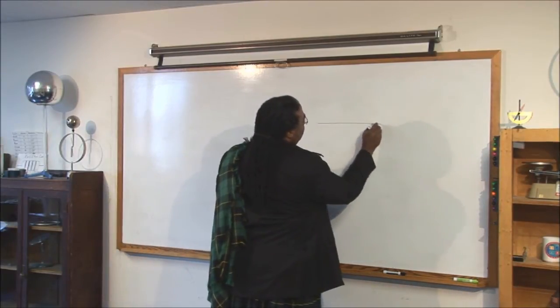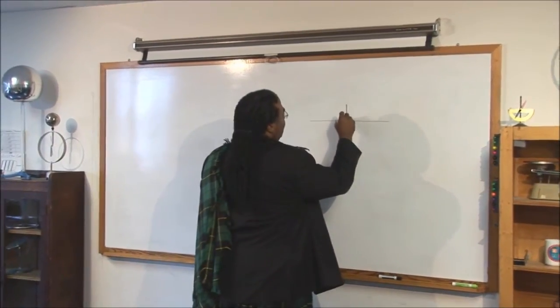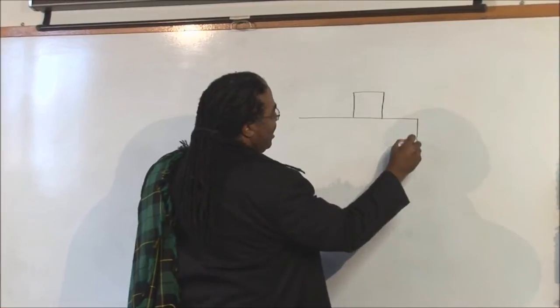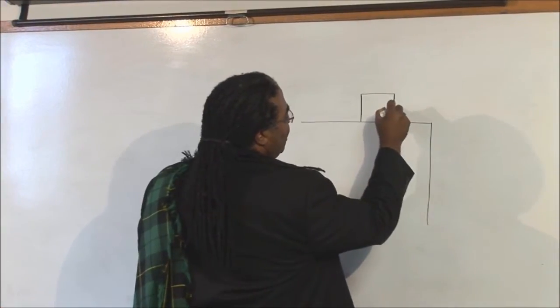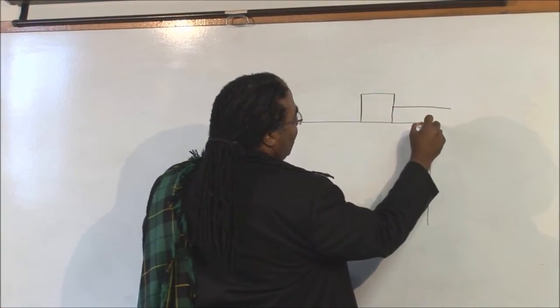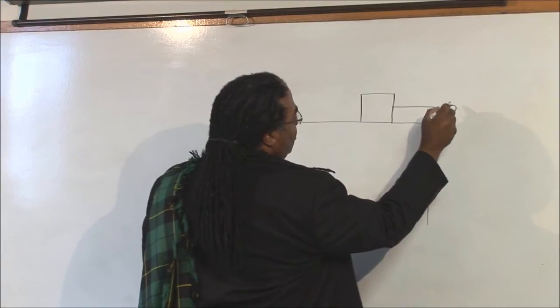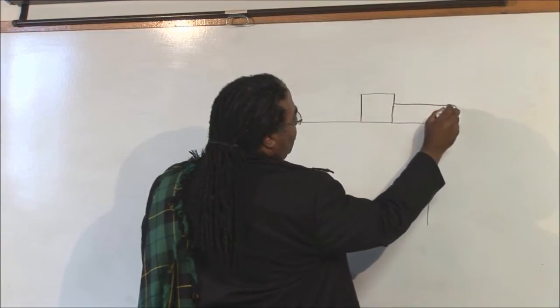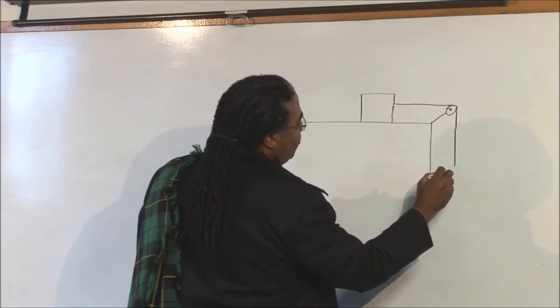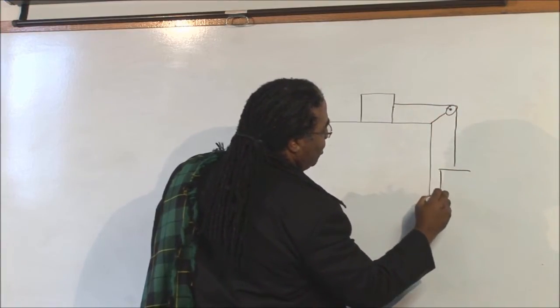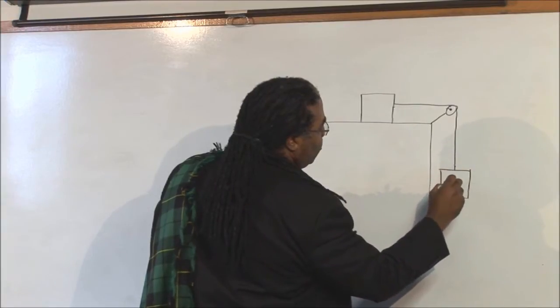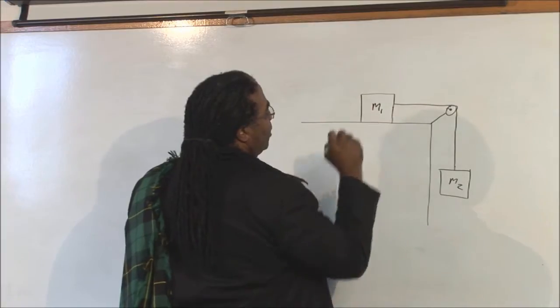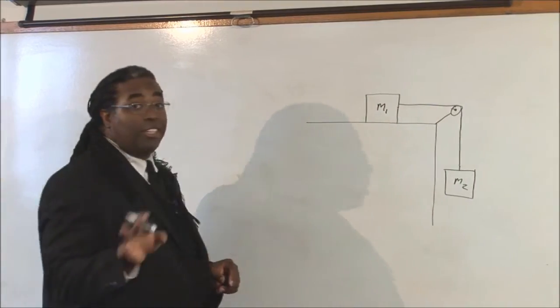Let's take a problem where we have a block sitting on a surface and it's attached to a block hanging off a table. Like this. We'll call this M2, we'll call this M1. And there's still no friction.